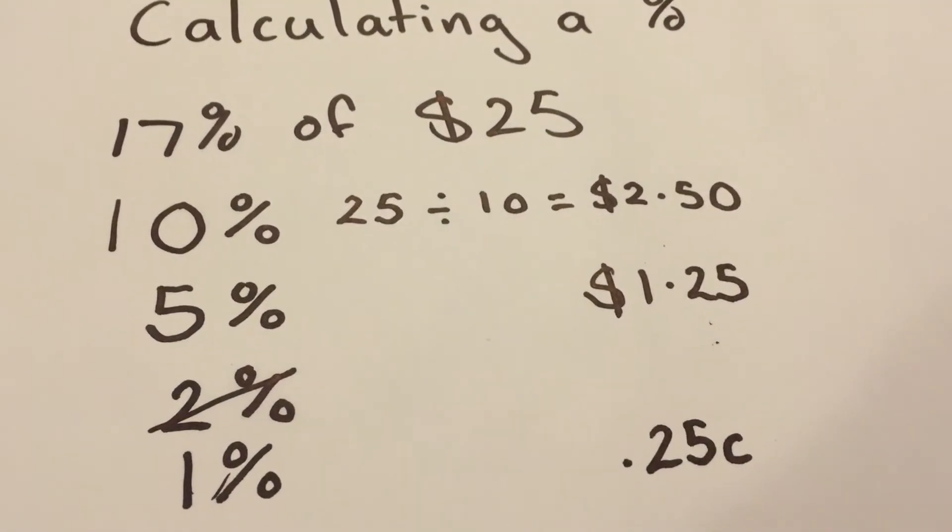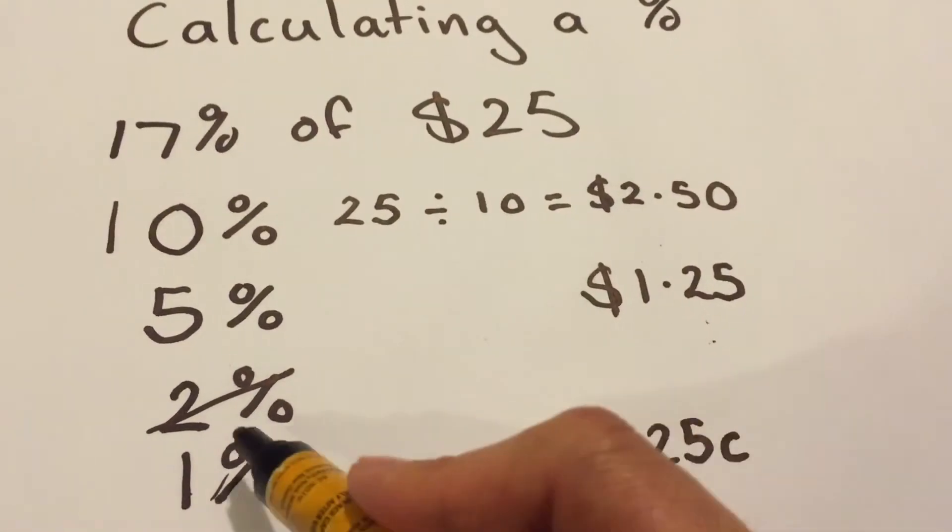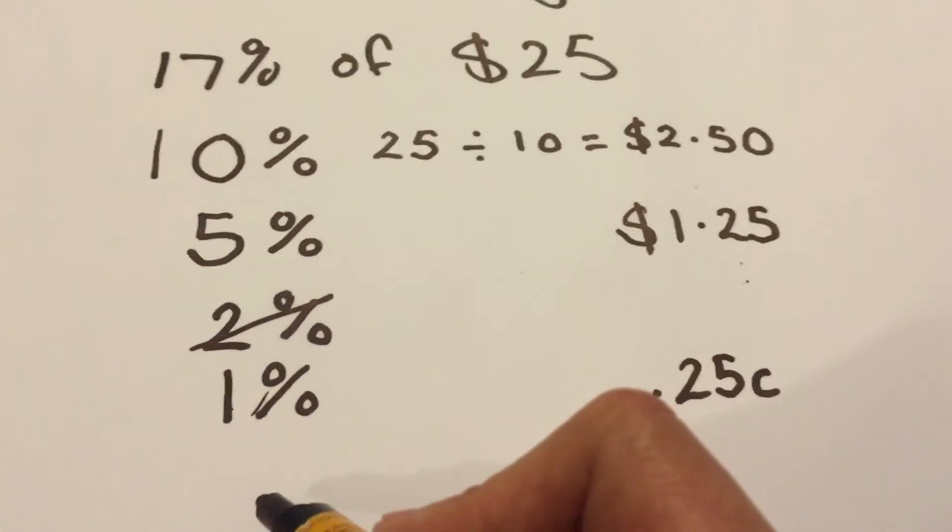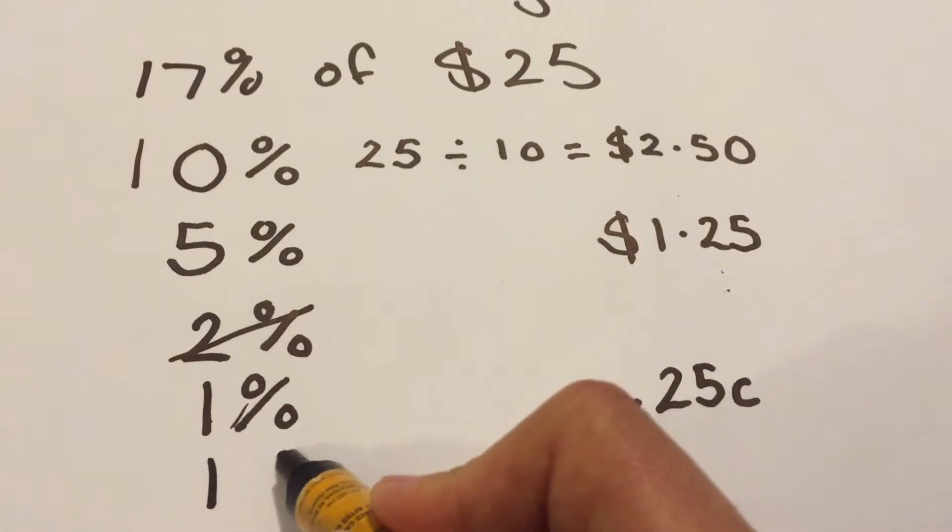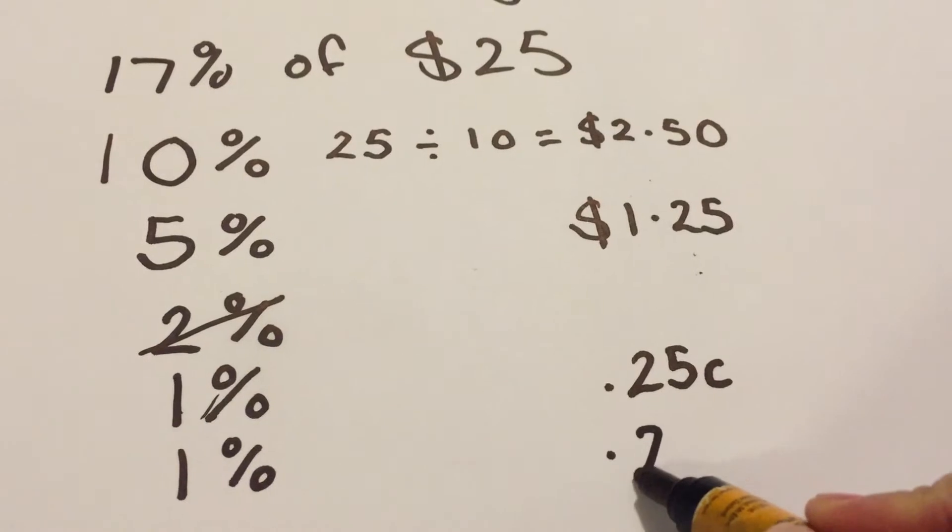25 cents, or 0.25 of a dollar. Now, that's only 1%. You need 2 of those to make 2%, don't you? So let's put another 1%. 25 cents.